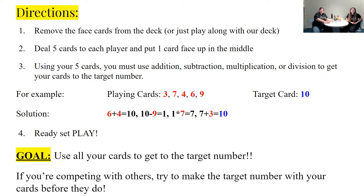So now we're ready to go play. We're going to do a couple of examples with you — we'll give you the cards in case you don't have your own deck at home. Remember, if you're competing with others, you want to try to make the target number with your cards before they do. So for our first example, I'm going to deal myself five cards and I'm going to take one and make that my target card. My target card is the ace of spades — an ace is one. My five cards are a two, a three, a five, a six, and a three.